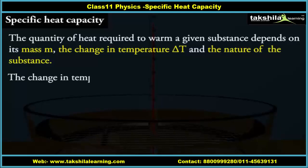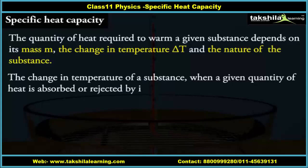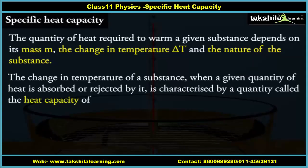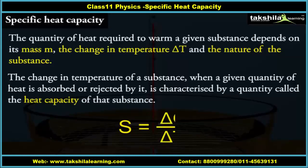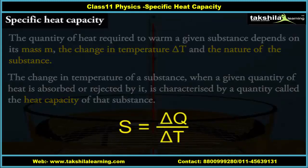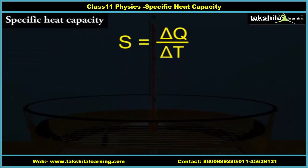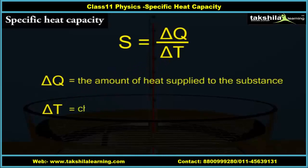The change in temperature of a substance when a given quantity of heat is absorbed or rejected by it is characterized by a quantity called the heat capacity of that substance. We define heat capacity S of a substance as S = ΔQ / ΔT, where ΔQ is the amount of heat supplied to the substance to change its temperature from T to T + ΔT.